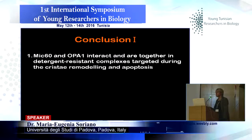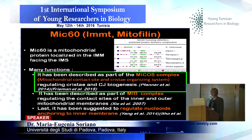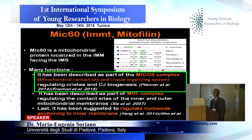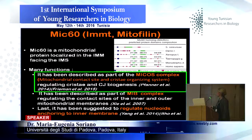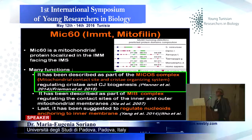I hope that I've convinced you that MIX16 and OPA1 interact in the same high molecular weight complexes, and this interaction is disrupted during cristae remodeling and apoptosis. Now, what is MIX16? MIX16 is a mitochondrial protein located in the inner mitochondrial membrane facing the intermembrane space — the same location as OPA1. It has been involved in many functions: described as part of the MINOS complex regulating cristae and cristae junction biogenesis in yeast, as part of a complex regulating contact sites between the inner and outer membrane for protein import, and also suggested to regulate the anchoring of the nucleoid to the inner membrane.